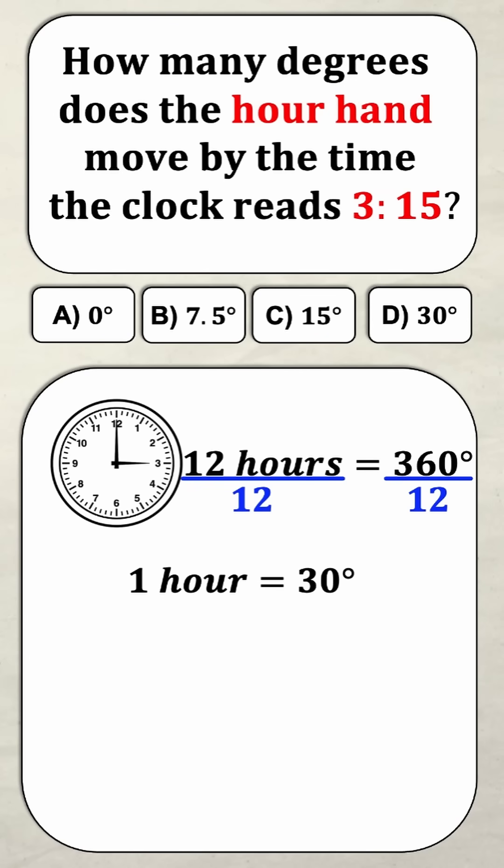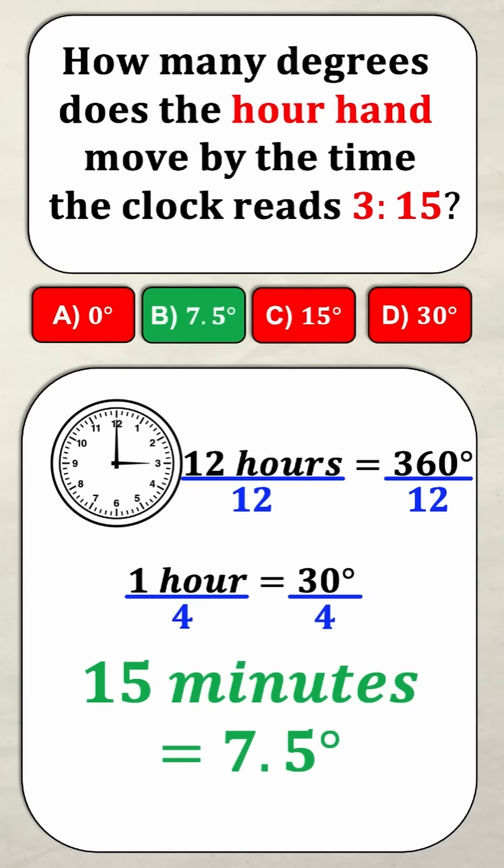To go from three o'clock to 3:15 is only 15 minutes, so how many 15 minute increments go into one hour? Well, four. So I'm going to divide one hour and 30 degrees by four, and as you can probably see that means that in 15 minutes the clock will have moved 7.5 degrees.